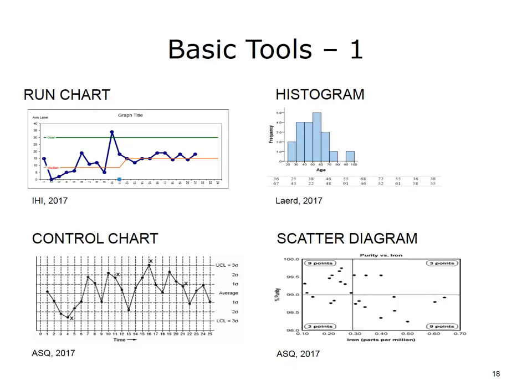A histogram is a graphical display of the frequency distribution of the quality characteristic of interest. A histogram makes variation in a group of data readily apparent and assists in an analysis of how data are distributed around an average or median value. Scatter diagrams, or plots, show the relationship between two variables. The scatter diagram can help to establish the presence or absence of correlation between variables, but it does not indicate a cause and effect relationship.